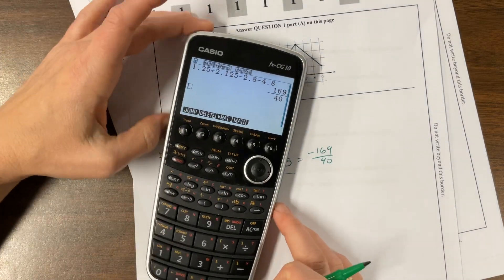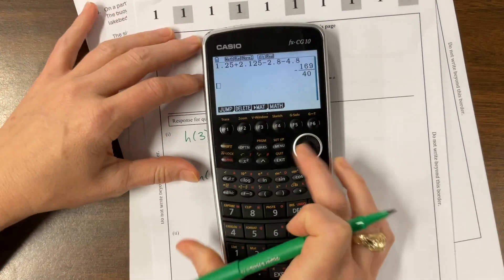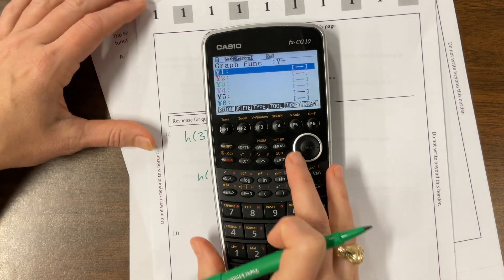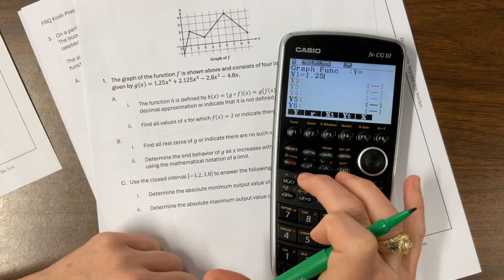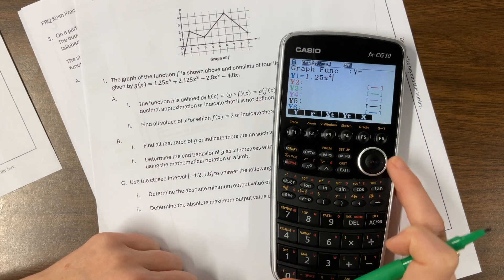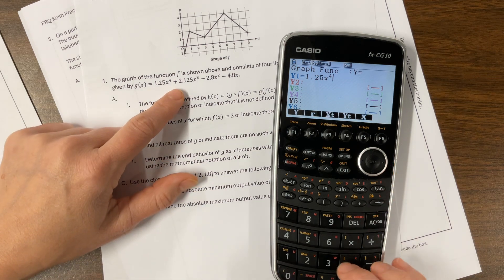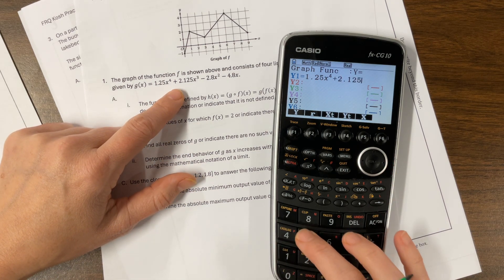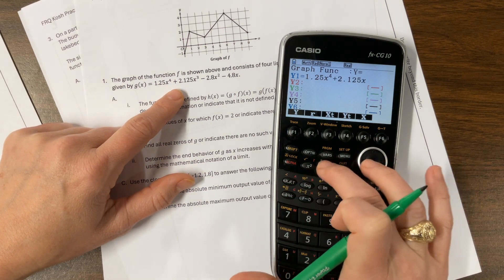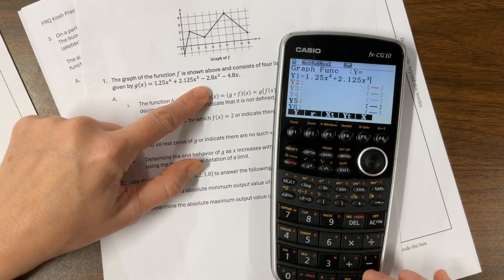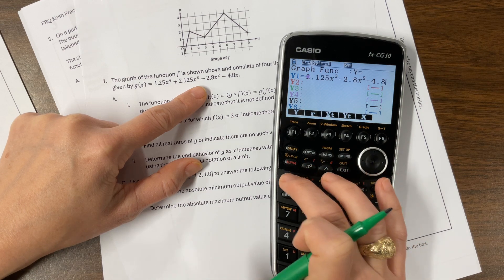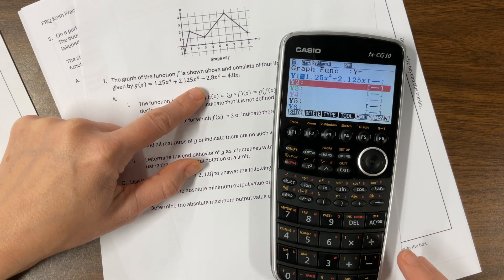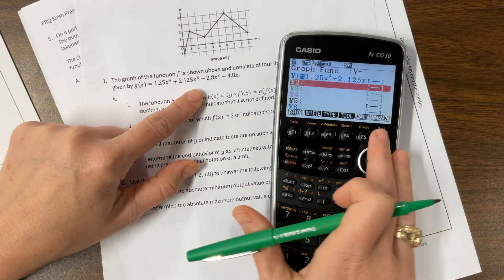My calculator can change that into a decimal if I wanted to, so negative 169 over 40. I think that this is probably the best answer for us on that one. Just in case this wasn't so easy to work with, and we probably need that equation in the calculator anyway, I'm going to type this in, and this is 1.25x to the fourth, plus 2.125 times x to the third minus 2.8x squared minus 4.8x.